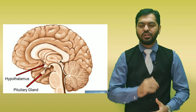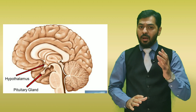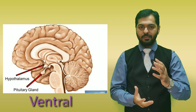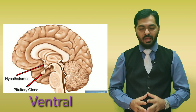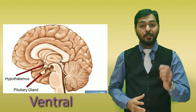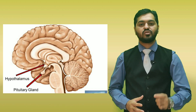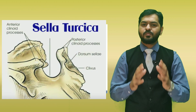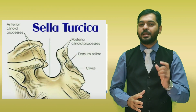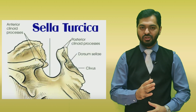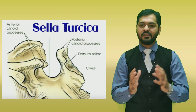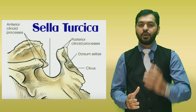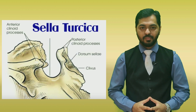Now let us discuss the location of the pituitary gland. The pituitary gland is mainly present on the ventral side of the brain, below the hypothalamus, and it is being protected by a bone of the skull that is known as the sphenoid bone. In the sphenoid bone, there is a depression and that depression is known as the sella turcica. So in the sella turcica depression of the sphenoid bone, the pituitary gland is located.